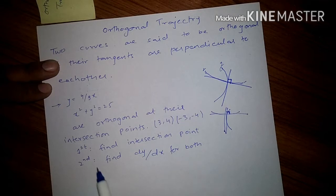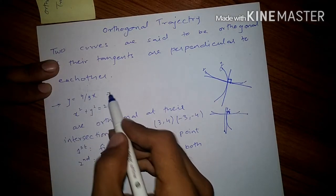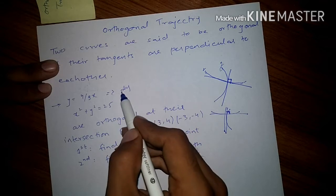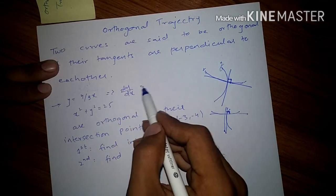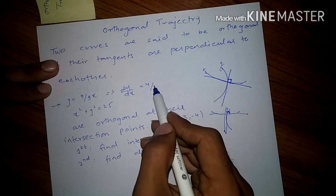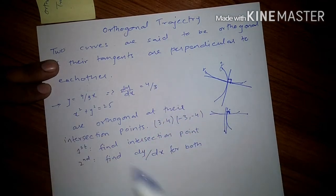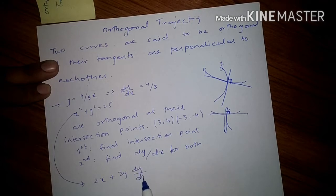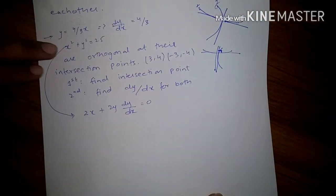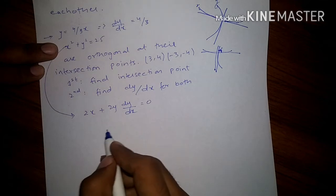Second step is find dy/dx for both equations. So dy/dx for the first equation is going to be 4 upon 3, and dy/dx for this equation is going to be 2x plus 2y dy/dx. Solving for dy/dx, dy/dx is going to be -x/y.